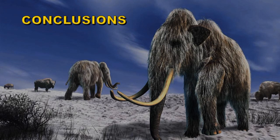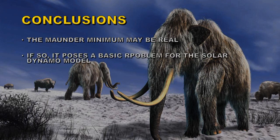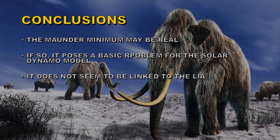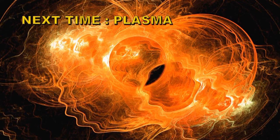To draw some conclusions: the Maunder Minimum may or may not be real, although it seems likely that it is given previous examples. It's probably just not yet very well understood. If so, it poses very basic problems for the solar dynamo model which we have yet to solve. It does not seem to be linked to the Little Ice Age, and even if we went into a prolonged solar minimum, Earth's temperature would not drop significantly — so there is no reprieve from global warming. Next time we're going to talk about plasma.